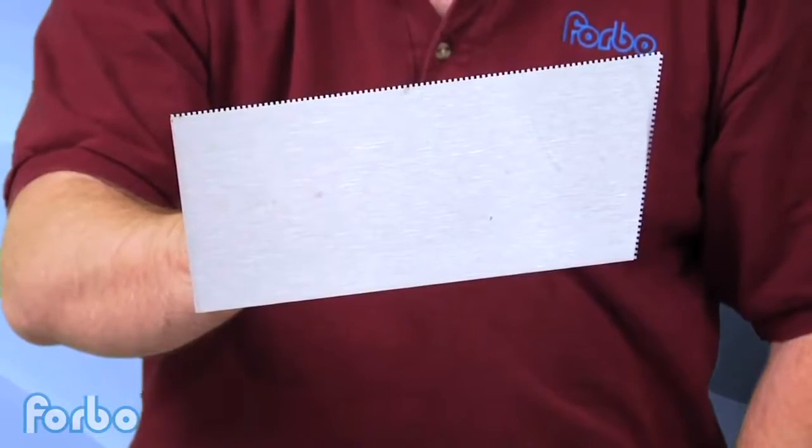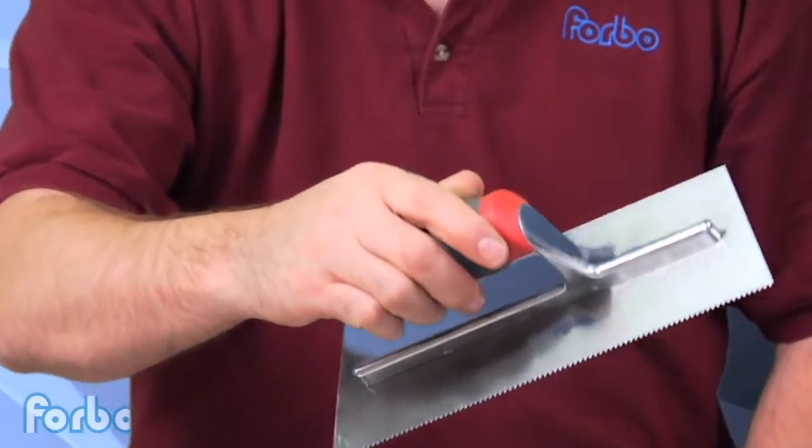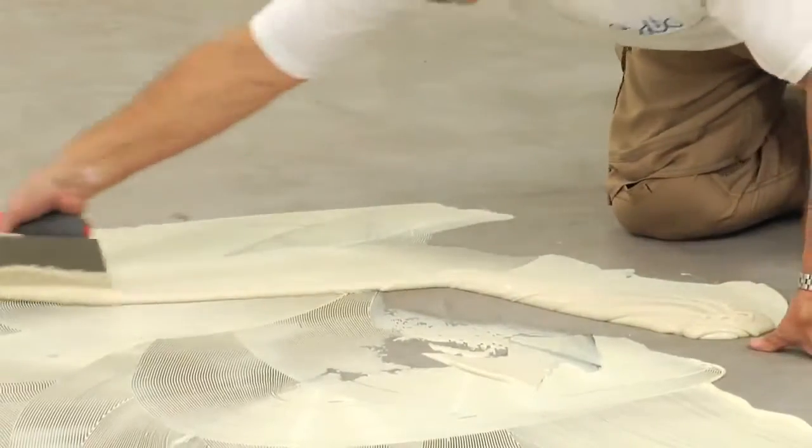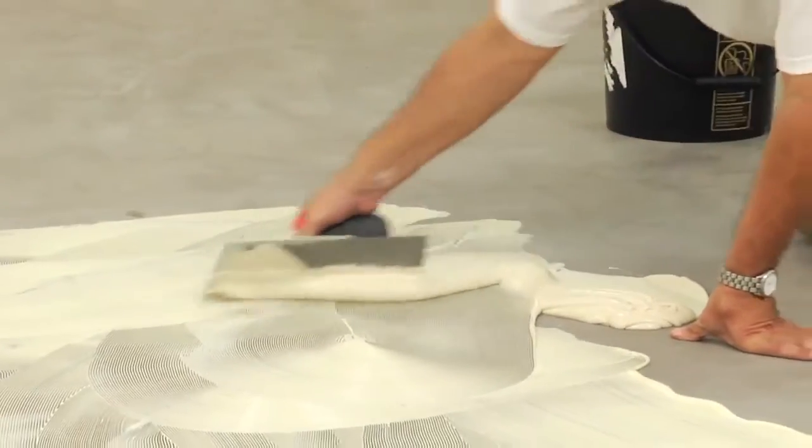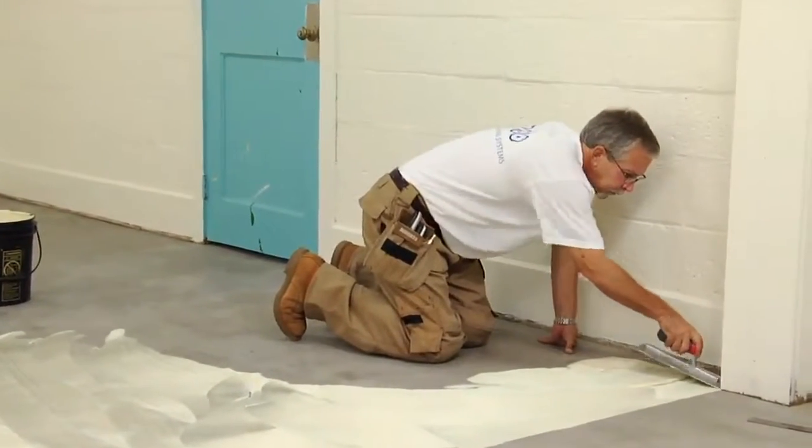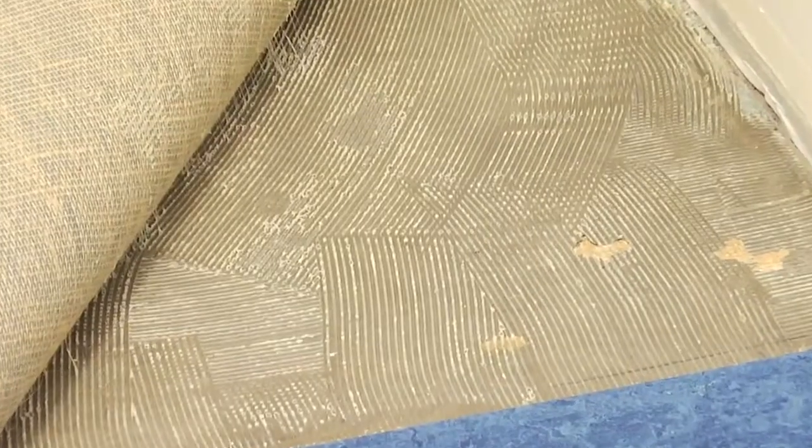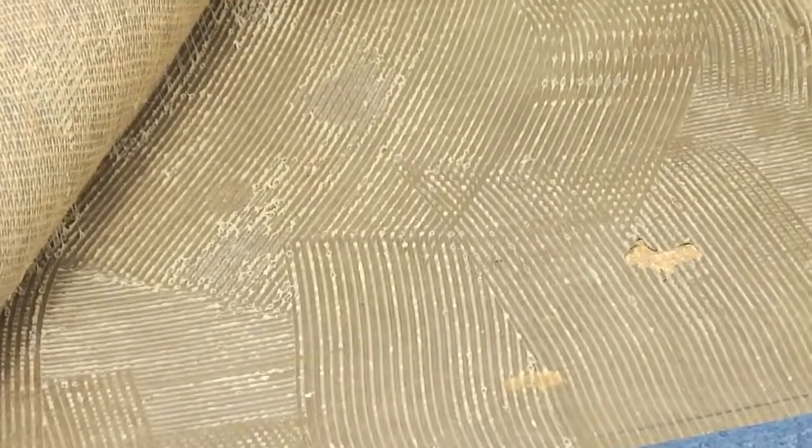Use the proper Forbo adhesive with a 16th inch square notch trowel. Install one sheet at a time, making sure to always place the flooring into wet adhesive. Spread the adhesive everywhere, including up to all edges and walls. Do not allow the adhesive to flash off or dry.